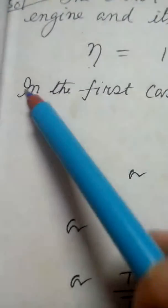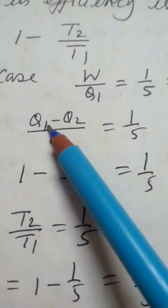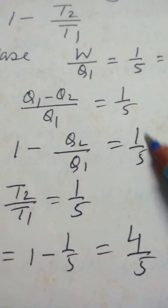In the first case, W/Q1 = 1/5. W = (Q1 - Q2)/Q1 = 1/5. 1 - Q2/Q1 = 1/5.